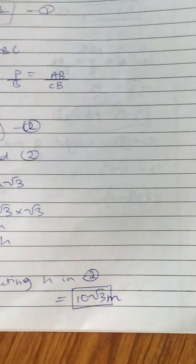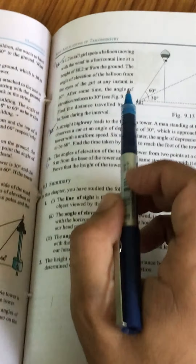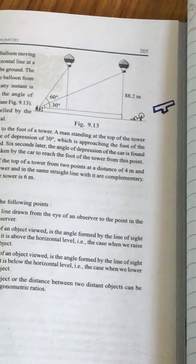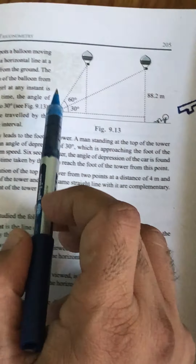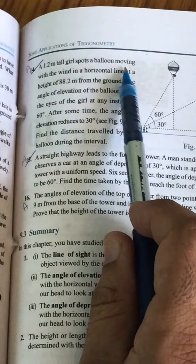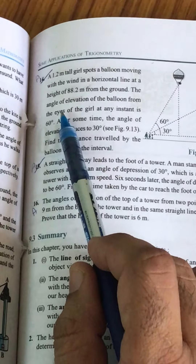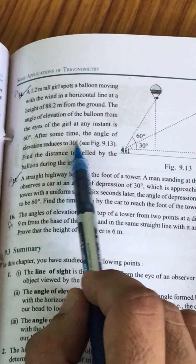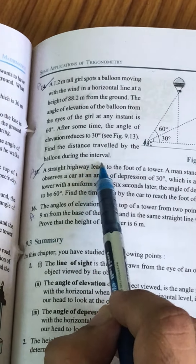Questions 11, 12, and 13 are your homework. Koi bhi doubt hai, comment box mein likhiye. Agar pictures chahiye register ki, please write it — I'll upload the pics. Now question number 14: a 1.2 meter tall girl spots a balloon moving with the wind in a horizontal line at a distance of 88.2 meter from the ground. The angle of elevation of the balloon from the eyes of the girl at any instant is 60 degree. After sometime the angle of elevation reduces to 30 degree. Find the distance traveled by the balloon during the interval.